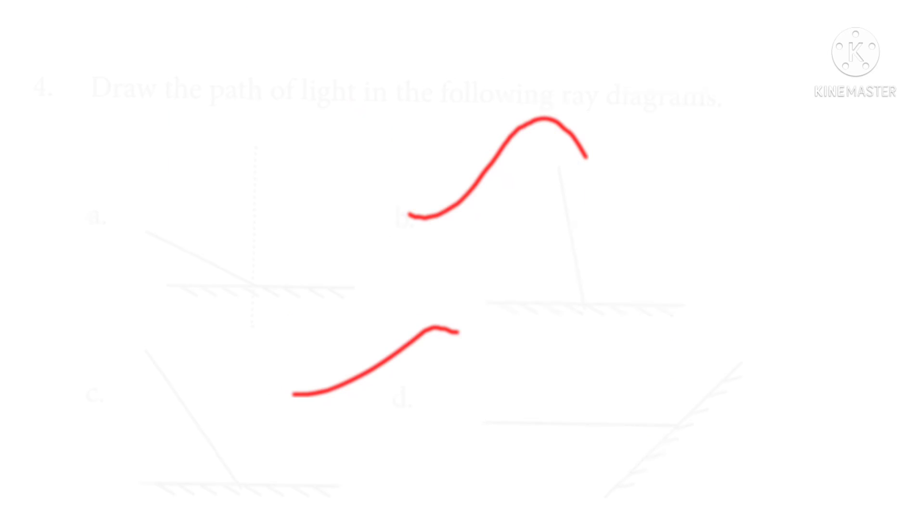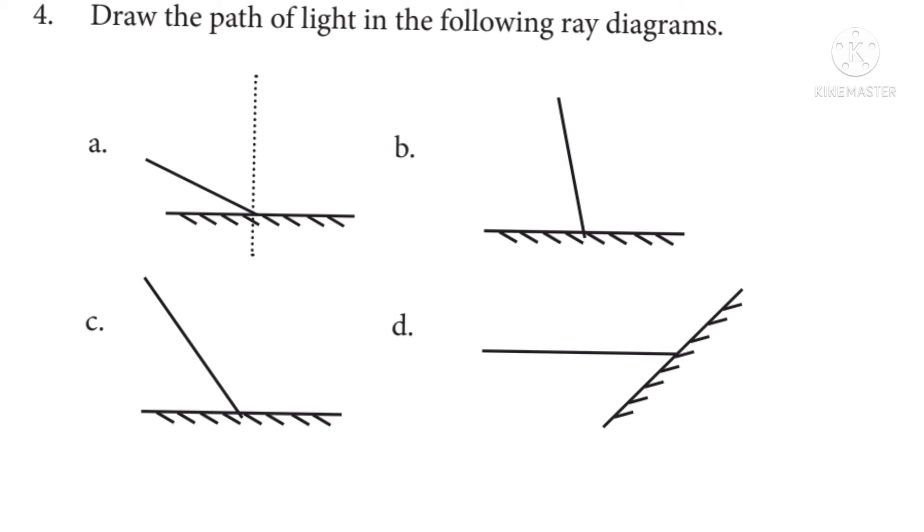Fourth question, draw the path of light in the following ray diagram. Here is a ray diagram. What we see here is the light ray. Light ray is the path of light. It will be an incident ray. It will be a reflecting ray.